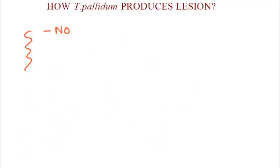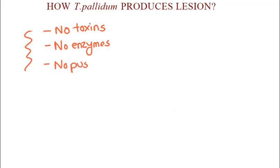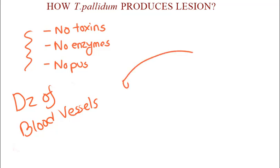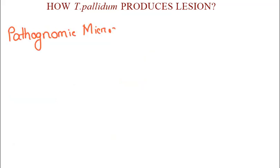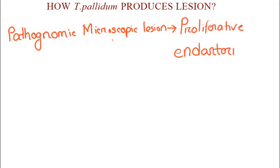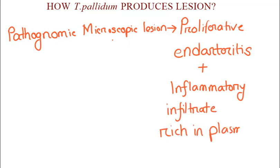Treponema pallidum produces no toxins, no enzymes. It is not a pyogenic organism. It produces systemic disease, but how? Basically, syphilis is a disease of blood vessels and the perivascular area. The pathognomonic microscopic lesion of syphilis is a proliferative endarteritis with accompanying inflammatory infiltrate rich in plasma cells.